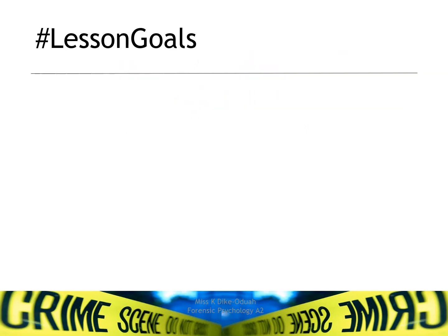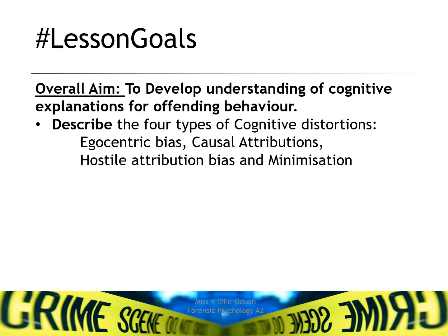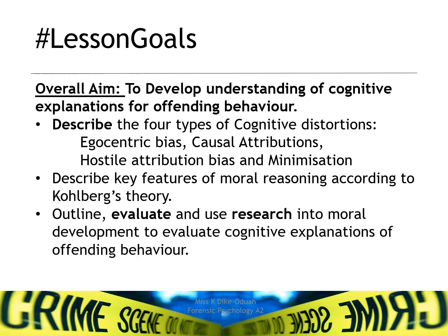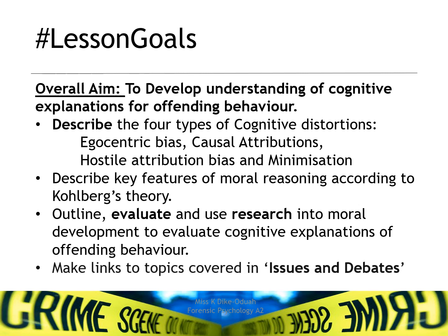We have a number of lesson goals today. The first is to develop an overall understanding of the Cognitive Explanations for Offending Behaviour. There are two main ones you need to know: cognitive distortions and Kohlberg's theory of moral reasoning. We're going to outline, evaluate, and use research into moral development to evaluate the Cognitive Explanations of Offending Behaviour, making links to Issues and Debates and additional AO3 points using our knowledge of psychology and approaches as a whole.